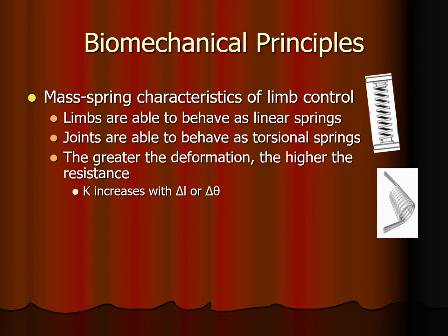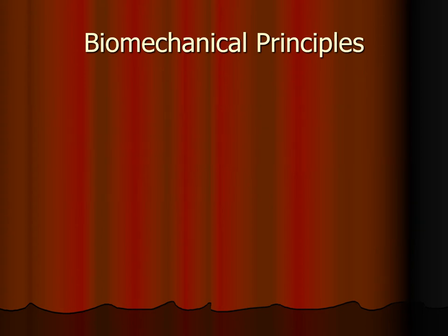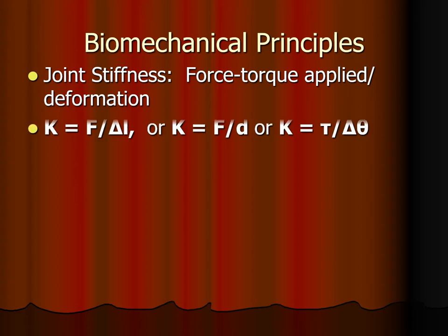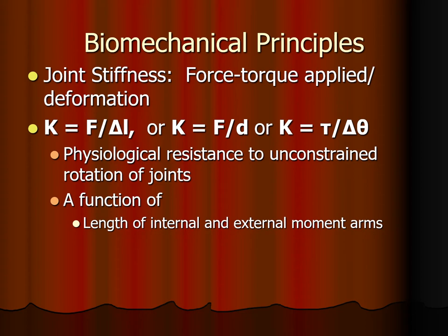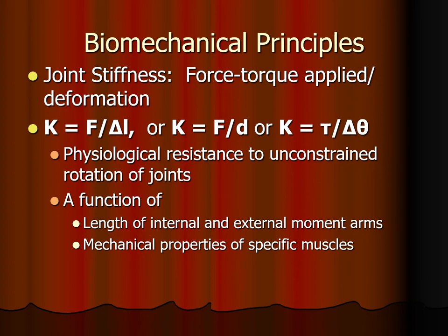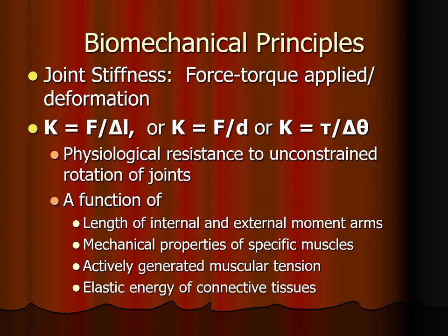In other words, the stiffness K increases with the change in length. That stiffness can be expressed in a simple equation: stiffness equals force over change in length of a limb, or stiffness equals torque over change of angle. The physiological resistance to unconstrained rotation of joints is a function of the length of the internal and external moment terms, the mechanical properties of specific muscles, actively generated muscular tension, and the elastic energy return of connective tissues.